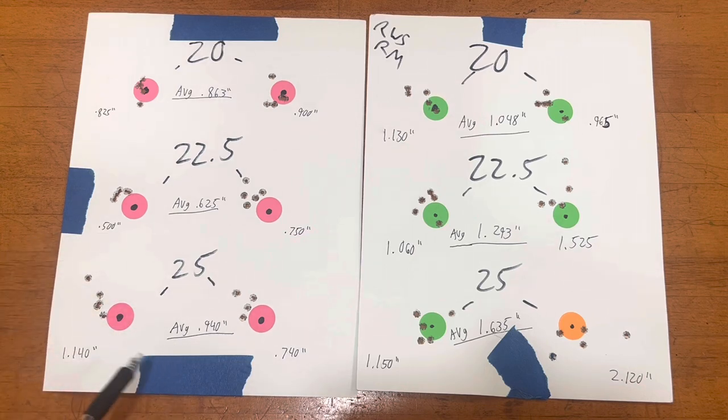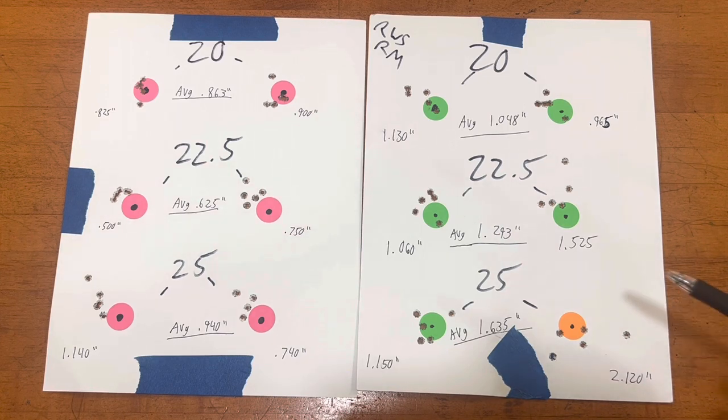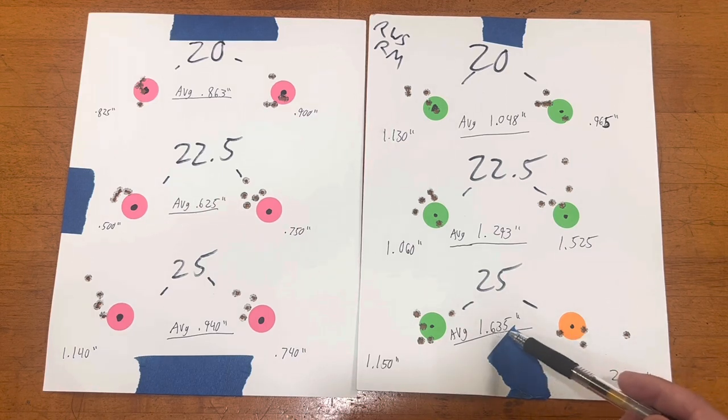Then last group here at 25 inch-pounds, we shot just over an inch on the Hogue and then a group in the sevens, about three-quarters of an inch. Moving over to 25 inch-pounds on the KRG, we shot 1.1 inches and then 2.1 inches. That was kind of crazy to see, averaging over an inch and a half.